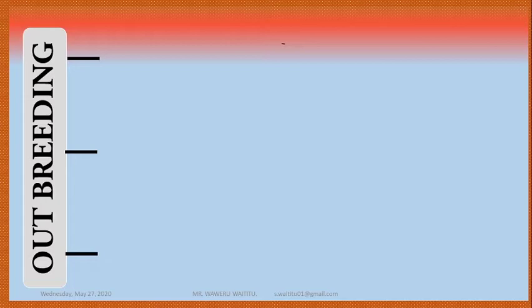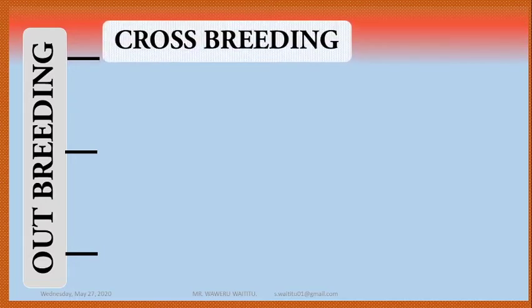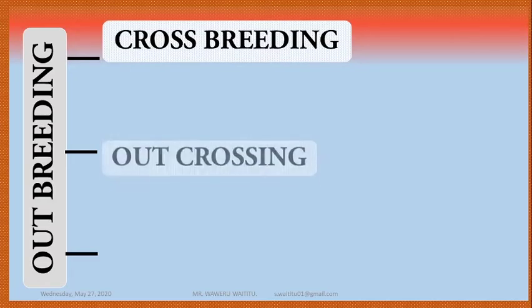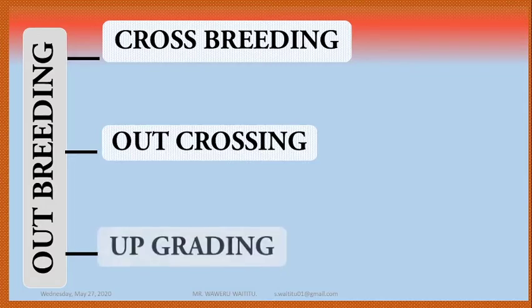The second category of breeding systems is outbreeding. Outbreeding is carried out in three ways: number one, through crossbreeding; number two, through outcrossing; and number three, through upgrading.